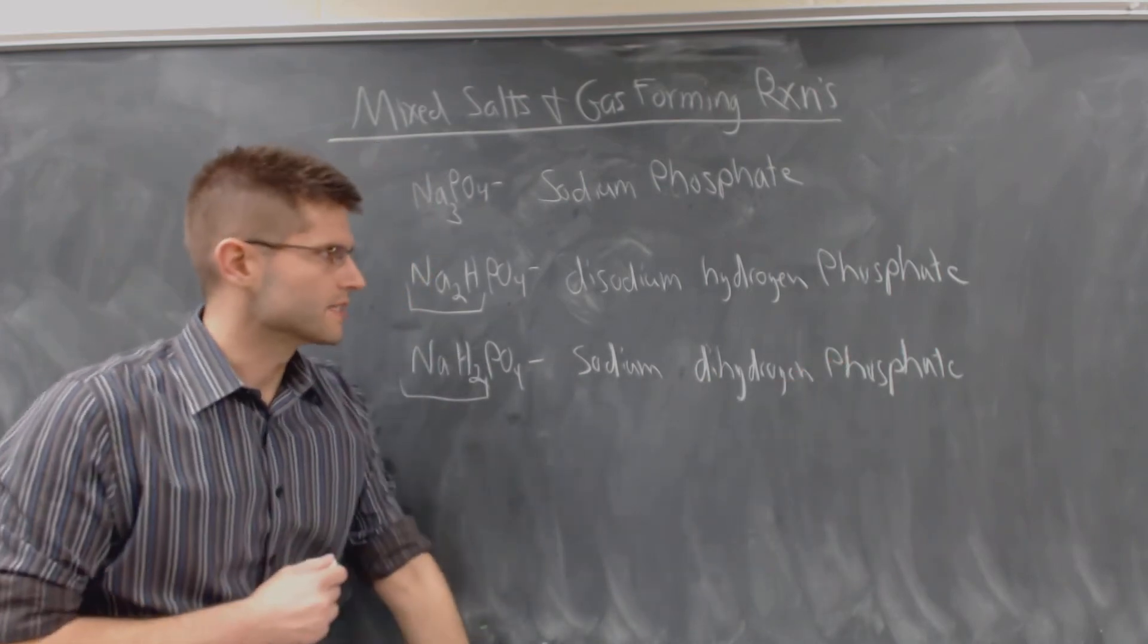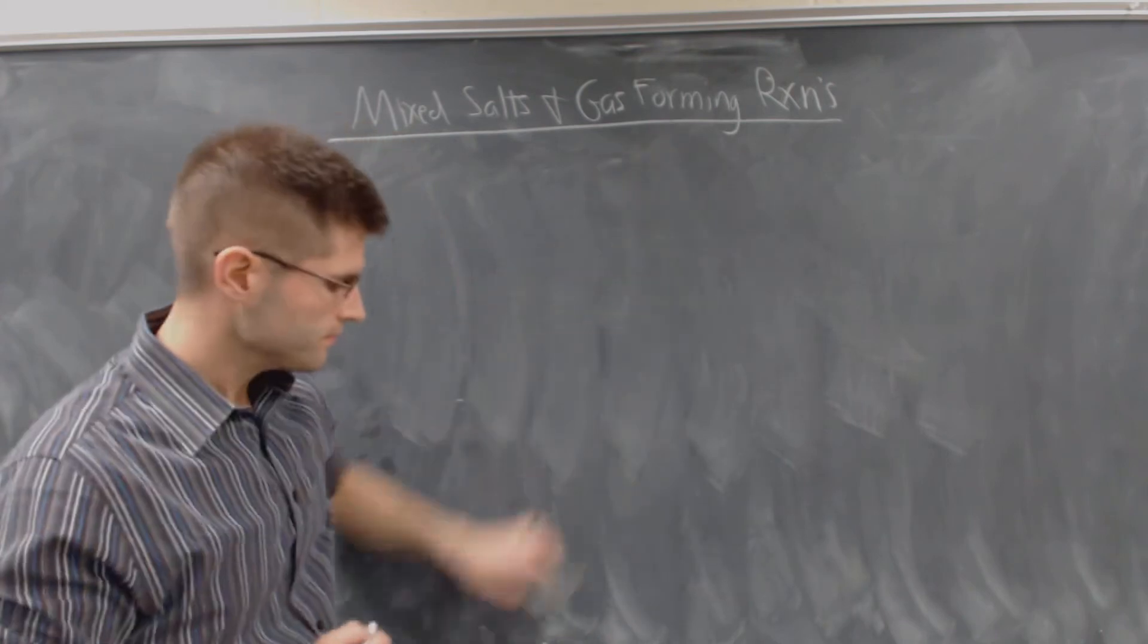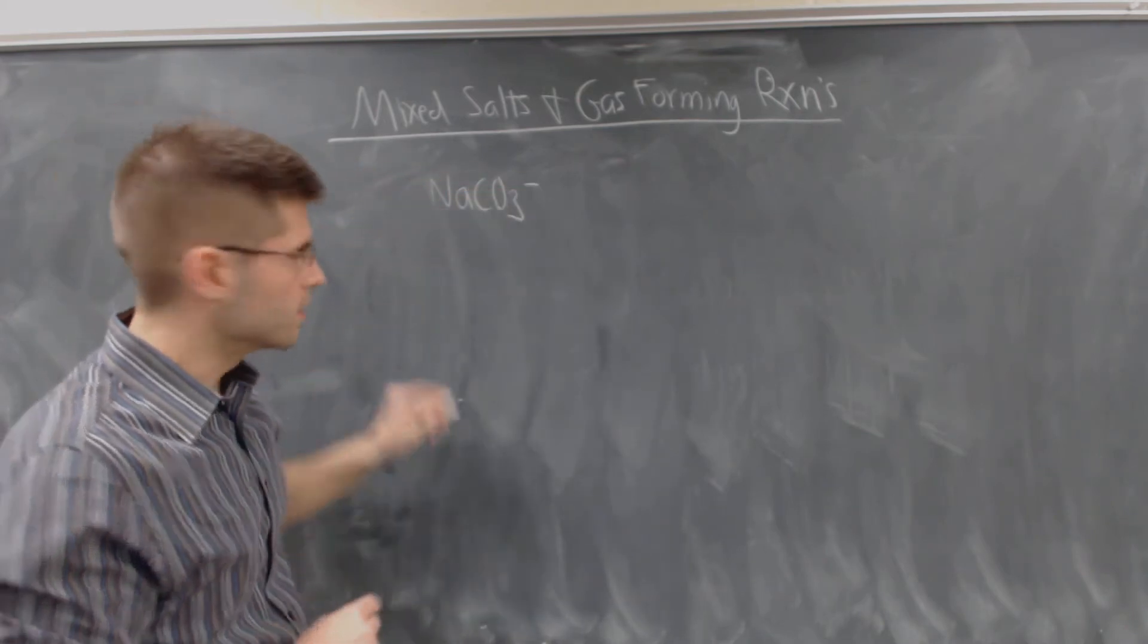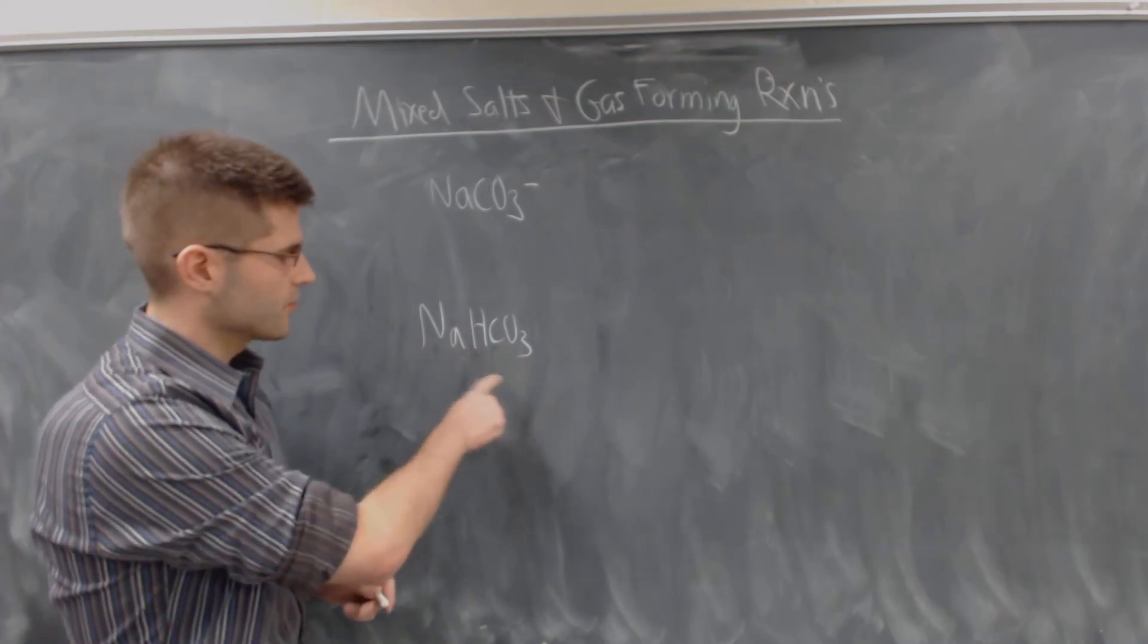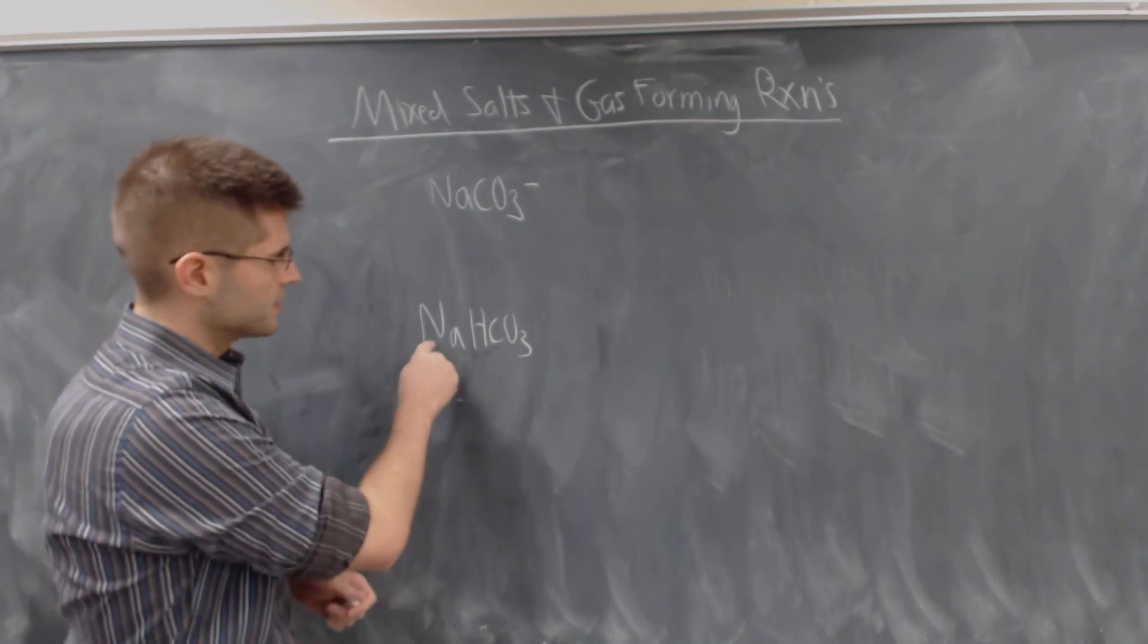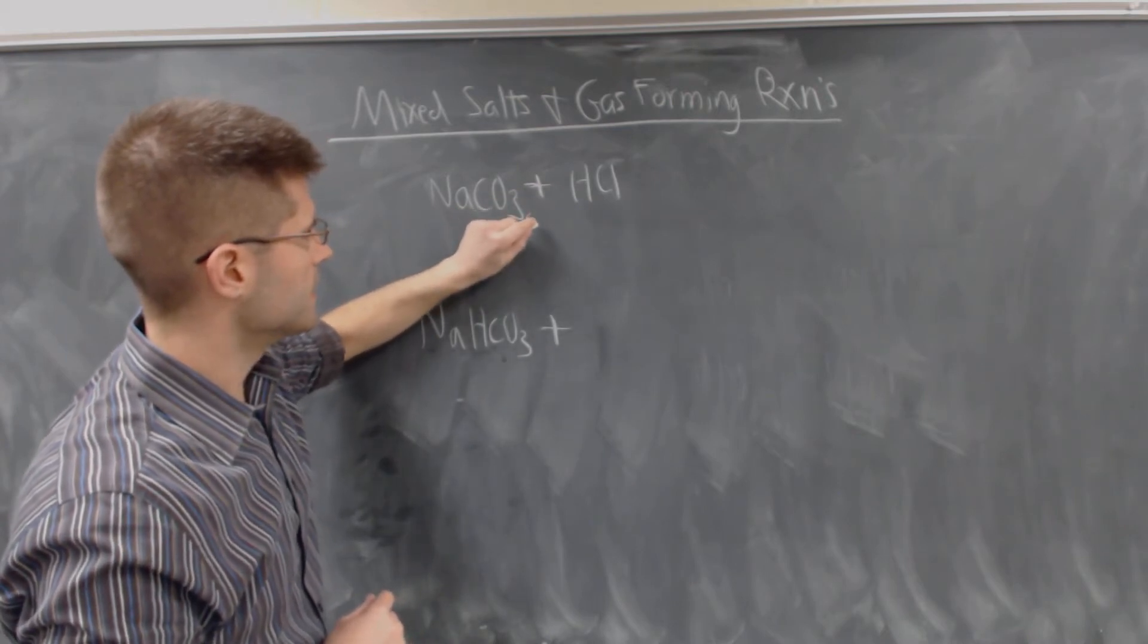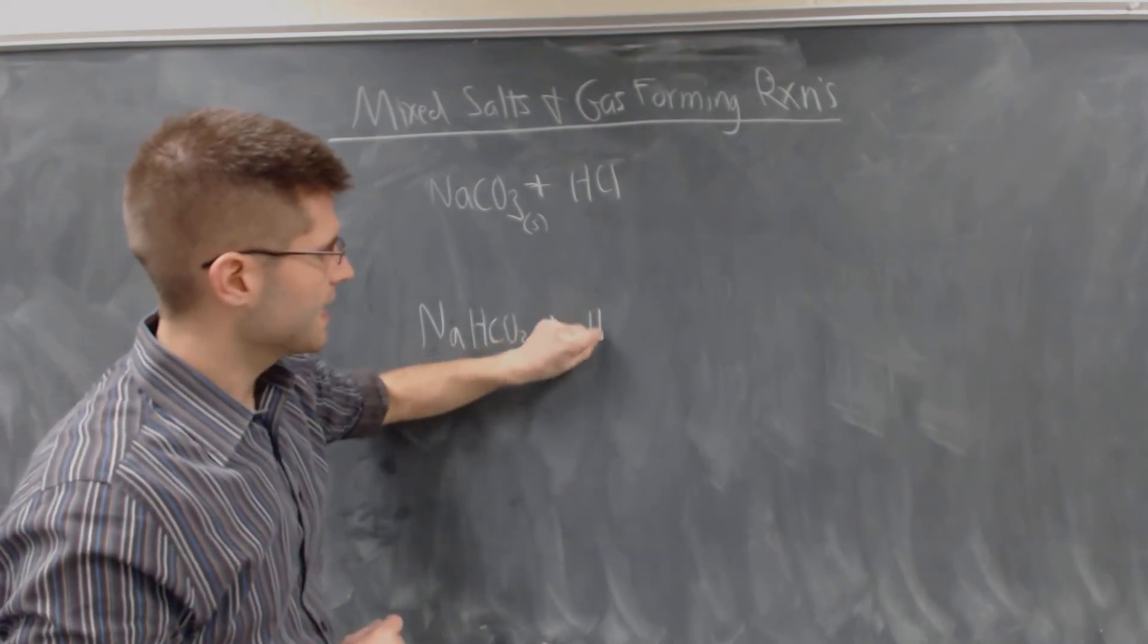Okay, so why in the world did we talk about these mixed salts? We're going to move on with this. We're going to talk about gas forming reactions now. So this is another thing that you're going to be able to predict what products are going to come out of a reaction. If we have sodium carbonate or sodium bicarbonate, NaHCO3, the common term is sodium bicarbonate here. Although we now know how to name the mixed salt, this would be sodium hydrogen carbonate. And we add to that an acid, HCl in both. So sodium carbonate is a solid. Sodium bicarb is also a solid. This is baking soda down here.